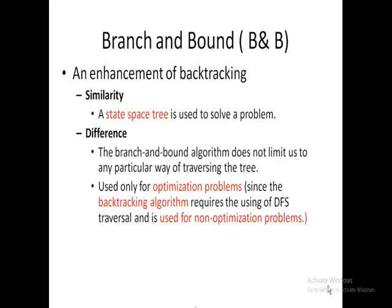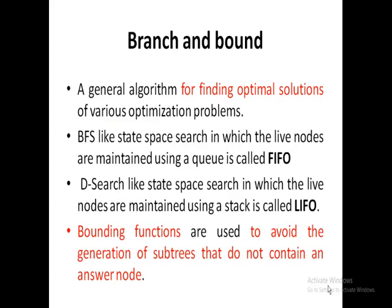In Branch and Bound, we can use DFS or BFS. We are typically using BFS — breadth first search. This algorithm is for finding the optimal solution for various optimization problems. The BFS-like state space search in which the live nodes are maintained using a queue is called FIFO. In DFS-like state space search, live nodes are maintained using a stack, called LIFO — last in first out.